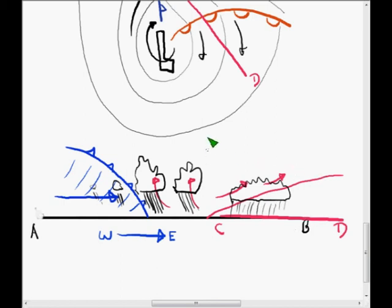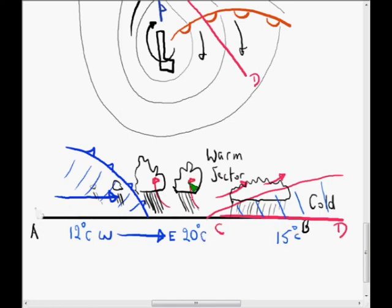The area between the two fronts is called the warm sector, because it is the warm tropical air. Underneath those two fronts the air is cold, although the air ahead of the warm front is not as cold as the air behind the cold front. So it may, for example, be 15 degrees ahead of the warm front, then 20 degrees in the warm sector, and then quite a bit colder in the cold sector behind the cold front. This is because the cold air behind the cold front is coming from much further south than the cold air ahead of the warm front.